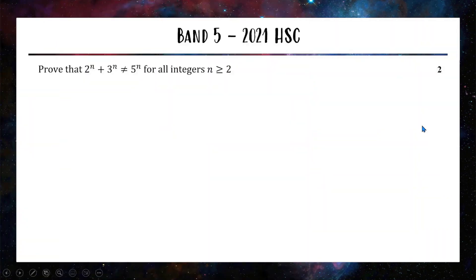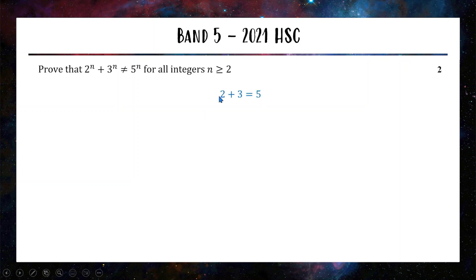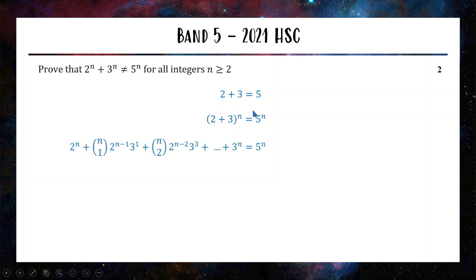Now let's move on to a band 5 question from the 2021 HSC. This question has a very specific trick — if you don't spot it, it's very hard to prove, but if you do know the trick you can answer it very quickly, which is why it's only two marks. Proving that 2^n + 3^n is not equal to 5^n if n is greater than or equal to 2. Obviously if n equals 1 this is true — we're trying to show that for any number bigger than 1 it's not going to work. Our process: we start with the fact that 2 + 3 equals 5, then raise both sides to the power of n to get (2+3)^n = 5^n.